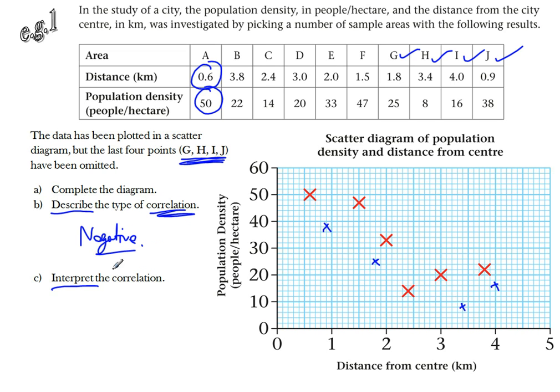Interpret the correlation, however, that requires more than just one word. It requires us to describe, as I did just a minute ago really, what the relationship means. So as you get further from the centre, the population density decreases. So I'll probably write it like this, as distance from the centre increases, population density decreases. Simple as that. But it's about knowing what the examiner wants to see for the two different types of question there.